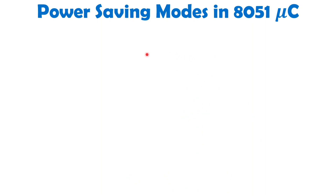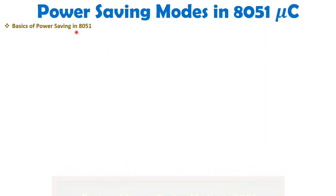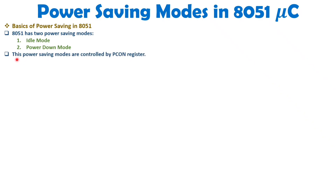Let us discuss the basics of power saving in 8051. With 8051 we have two power saving modes: idle mode and power down mode. We can control these power saving modes using the PCON register, which is the power control register — a special function register (SFR) of the 8051 microcontroller.